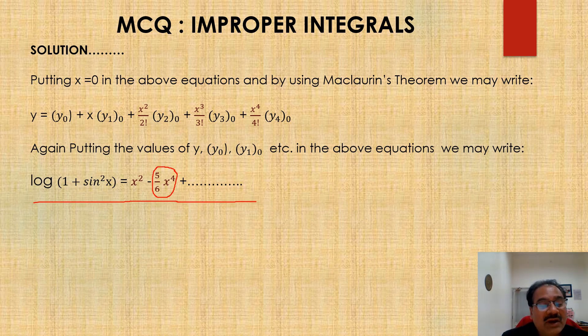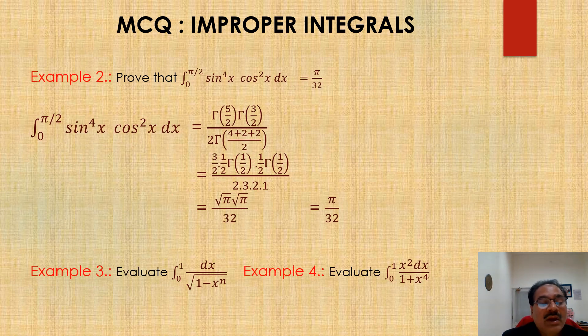So if you will do the practice, then there will be no problem. Similarly, the second problem are such kind of problem like this: prove that 0 to pi by 2 sin power 4 x cos square x dx is equal to this. So we will use by gamma function. Just use the formula 0 to pi by 2 sin power m x into cosine power n x dx.